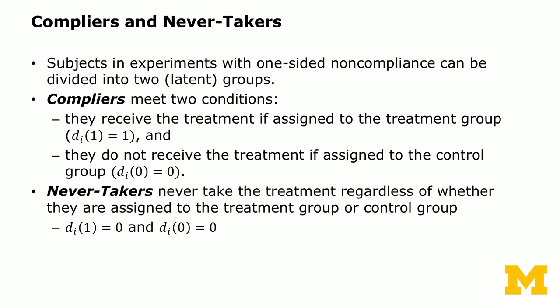Never-takers never take the treatment regardless of whether they're assigned to treatment or control. So di(1) = 0 — if assigned to treatment, they are not treated — and di(0) = 0 — if assigned to control, they're also not treated. Thinking of the control group as people you don't touch: when you send out letters, a random subset does not receive letters, and never-takers are people who receive letters but don't read them. So those are the two types.